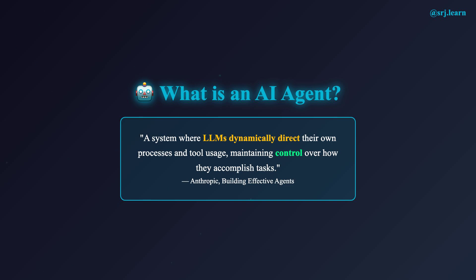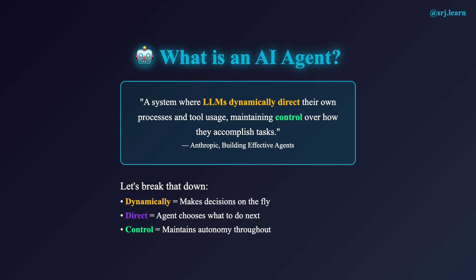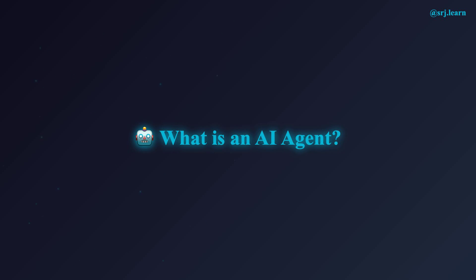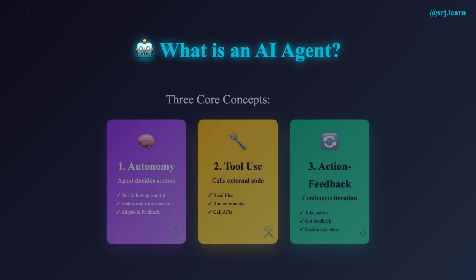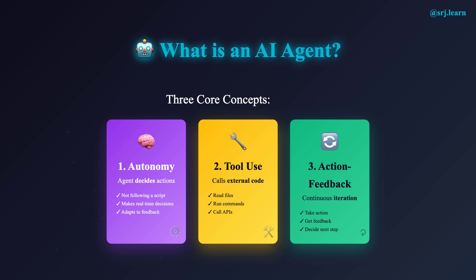The LLM makes decisions in real-time about what to do next. Agents are built on three core concepts. First, autonomy — the agent decides which actions to take, not just following a predetermined script. Second, tool use — agents can call external functions to perform actions beyond just generating text. And third, the action feedback loop — the agent takes an action, evaluates the feedback, and decides what to do next. This is different from an agentic workflow where code controls the flow, not the LLM. In workflows, the code decides which LLM calls to make and in what order. In true agents, the LLM is in control.